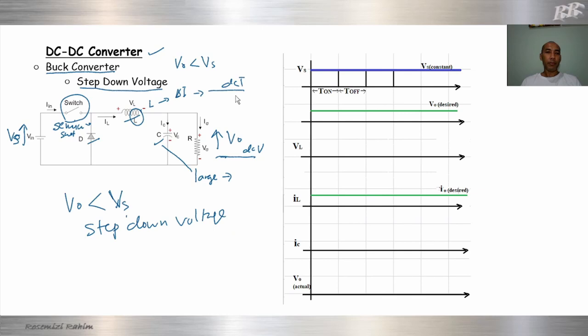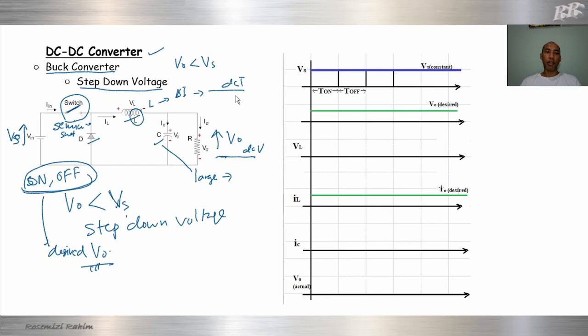The function of the switch is to switch on and switch off. By controlling this switch on and off, we can determine the amount of our desired output voltage. So now, we analyze our circuit in the waveform. We have voltage source, inductor voltage, inductor current, capacitor current, and also the actual value of output.